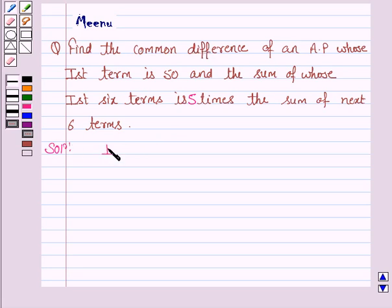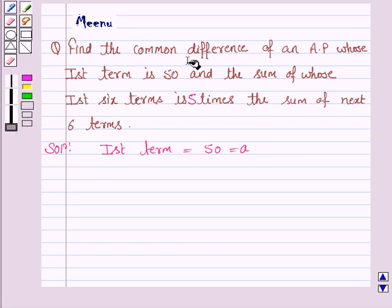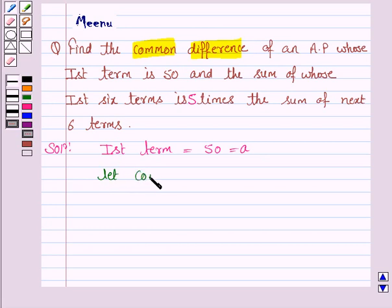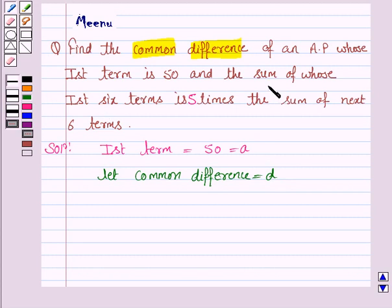We are given that the first term of an AP is 50. Let this be A. We have to find the common difference, so let the common difference be equal to D. We are given that the sum of the first 6 terms of this AP is equal to 5 times the sum of the next 6 terms.